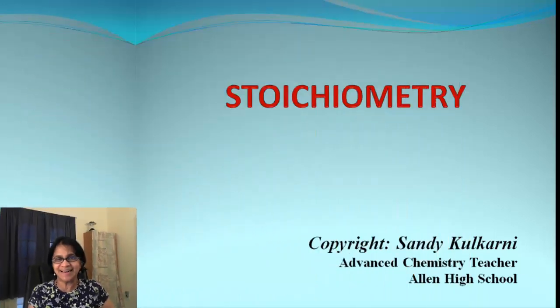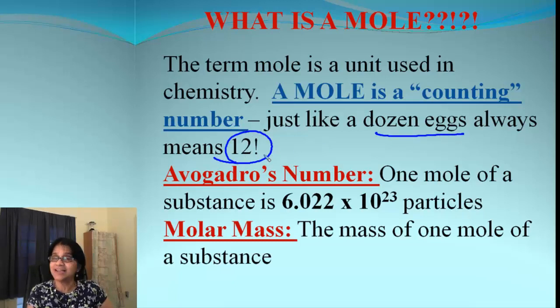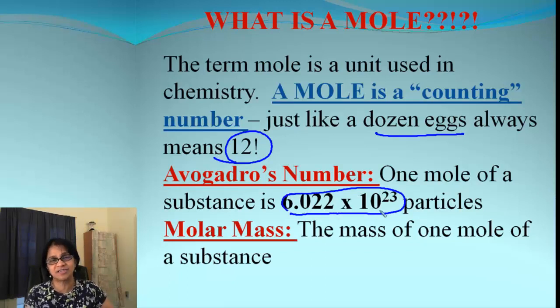So what is a mole? Just like we have one dozen eggs equals to 12 as a number, a mole is simply a counting number. But how much is it? A mole is equal to a certain number of particles, and that particle number is given right here: it is 6.022 × 10^23 particles, and it's called Avogadro's number.